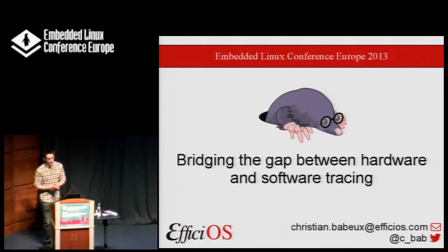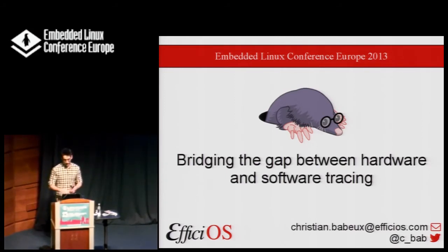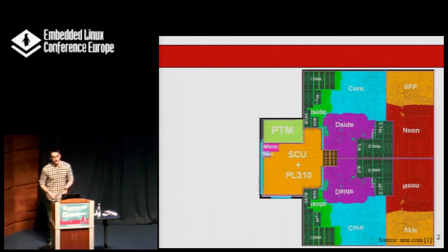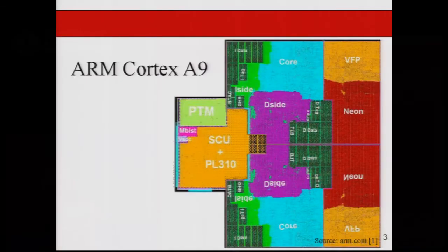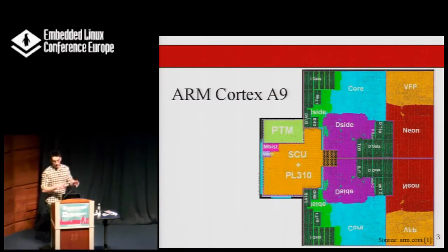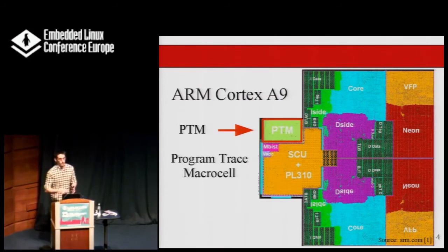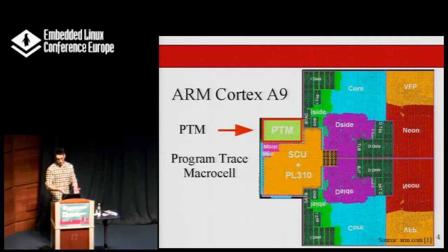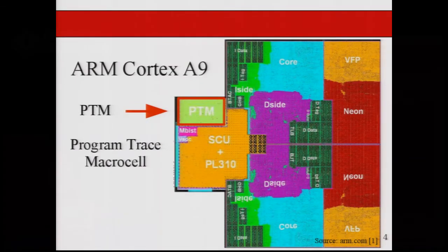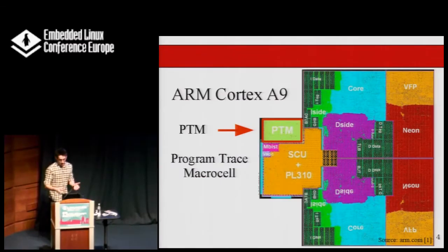The title of the presentation is 'Bridging the Gap Between Hardware and Software Tracing.' My name is Christian Babeux. When I was preparing this talk I stumbled upon a picture of an ARM processor — the Cortex-A9. What I found quite interesting is that you have all the logical blocks: the core, the floating point unit, the Neon SIMD, the data cache, the snoop control unit, and the PTM — the Program Trace Macro Cell. This debug and tracing block is roughly half the size of the Neon SIMD, yet in open source software we're not really using the PTM much in Linux.